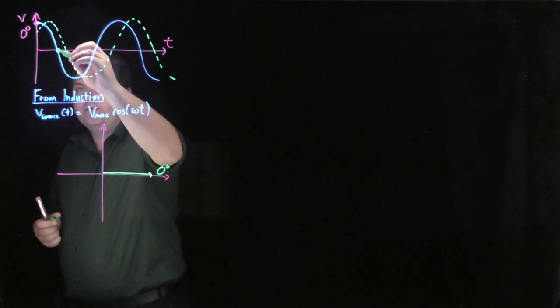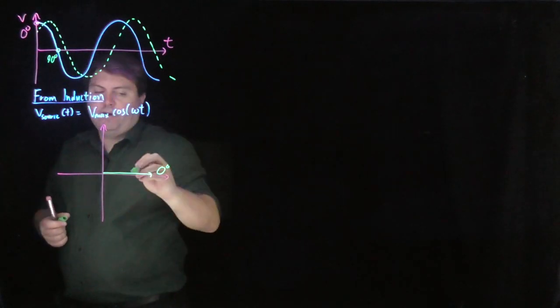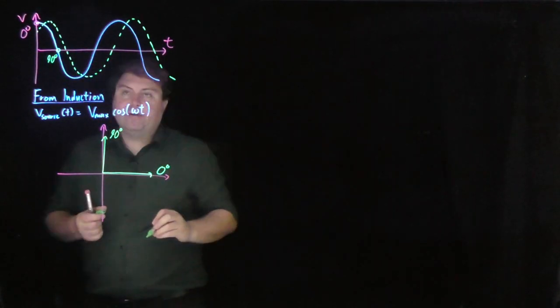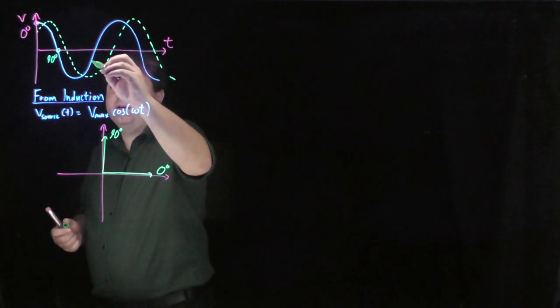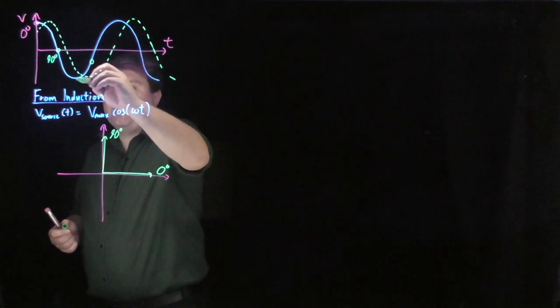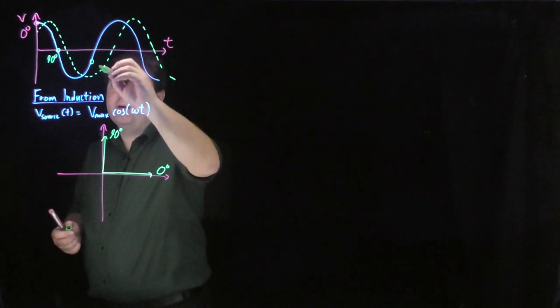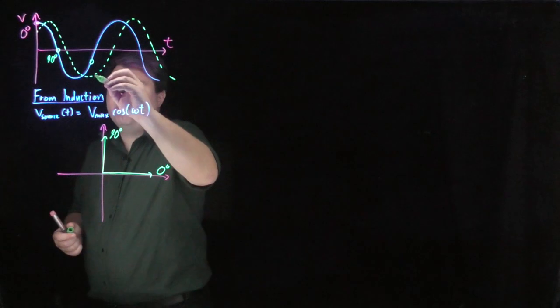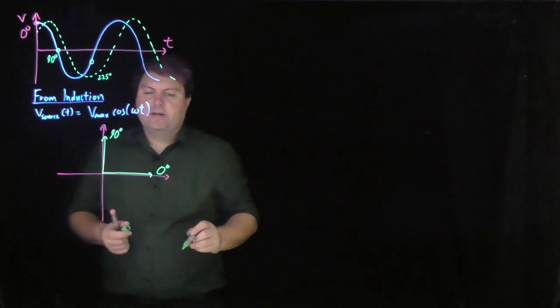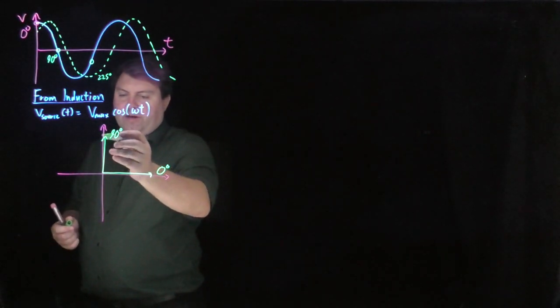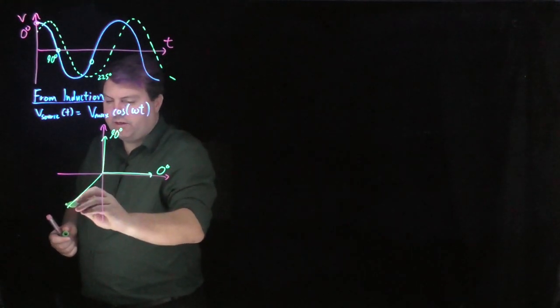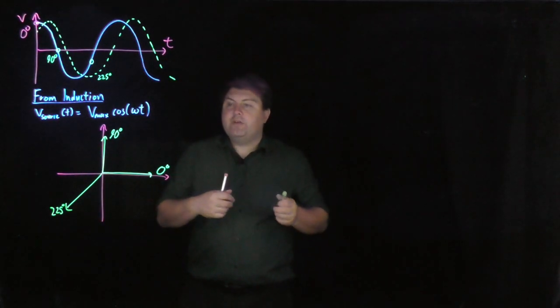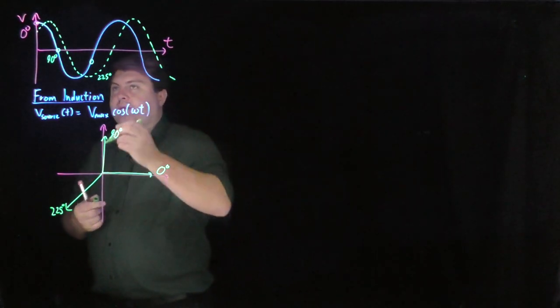If we are at this point, we are at 90 degrees, so we would draw 90 degrees. If we are down here, this is after 180 but before 360, in fact even before 270, so maybe we'll say this is 225 degrees or something like that. This would be around 225 degrees. And we can do this for any arbitrary angle that we want.